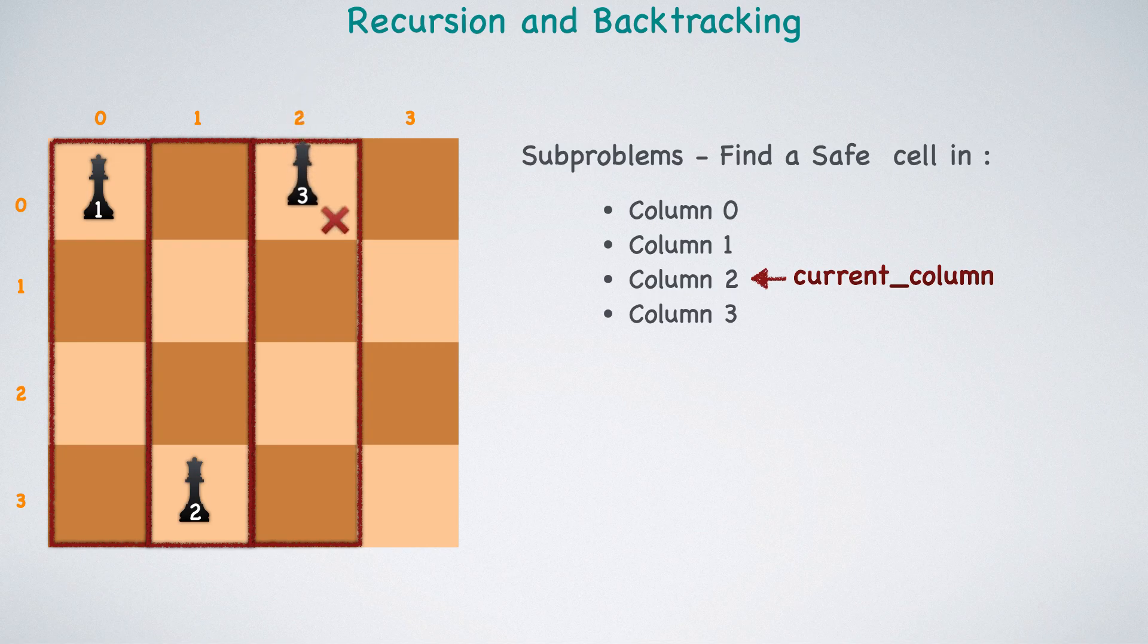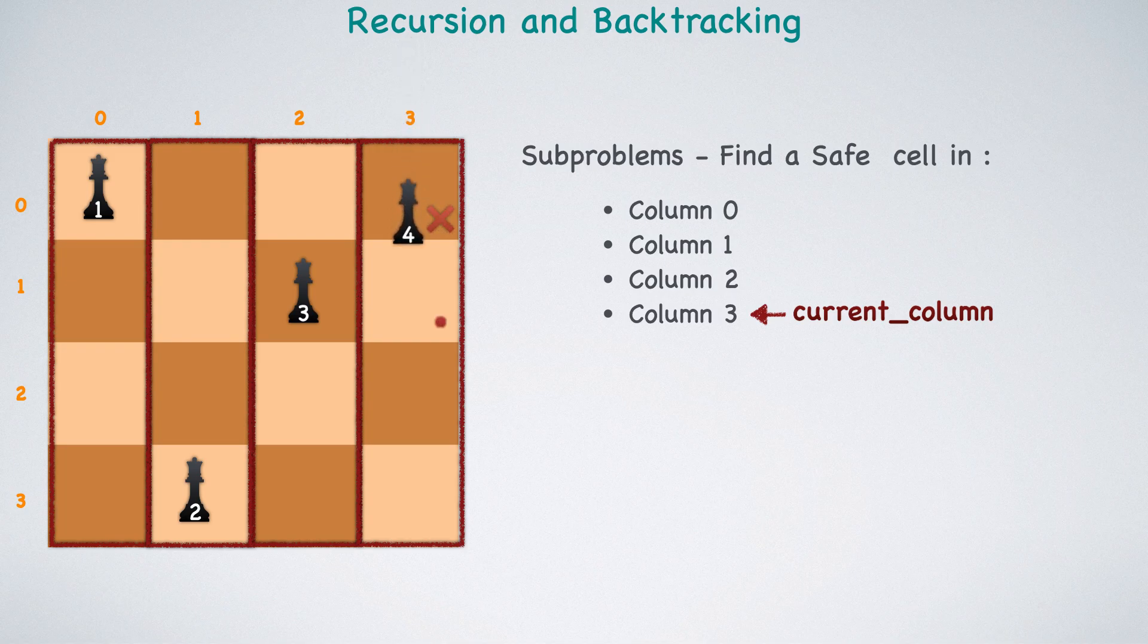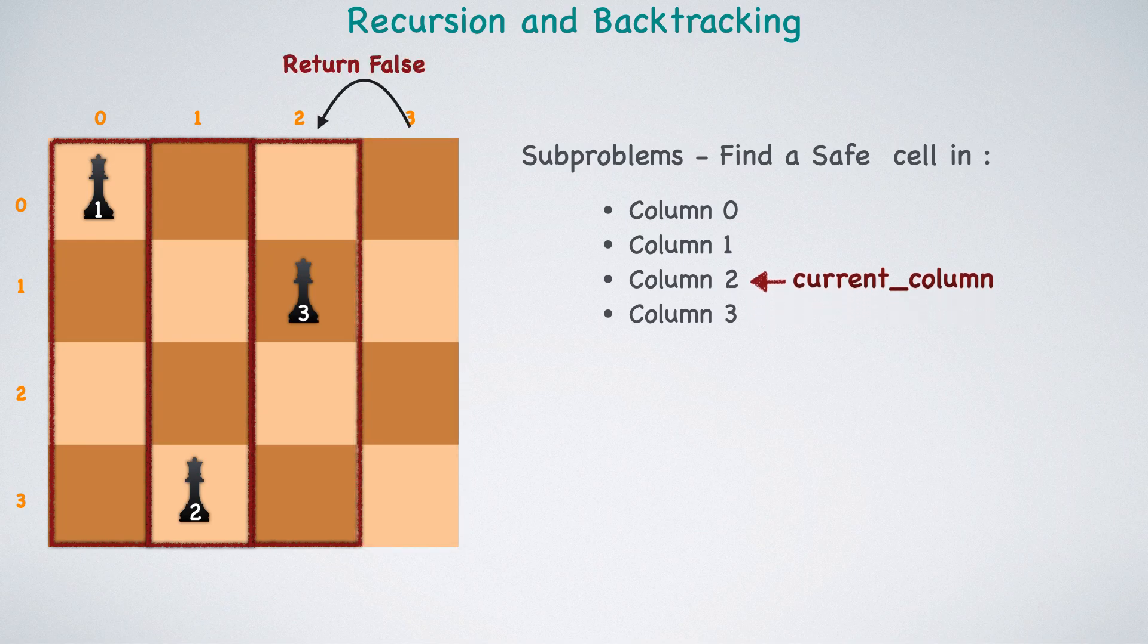Now, the third queen can be securely placed in this cell. We will recursively solve the problem for the fourth column. None of the cells are safe for the fourth queen. We will backtrack by removing the fourth queen from the board and returning false to the calling function of the third column.